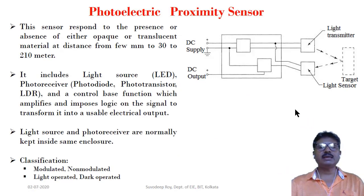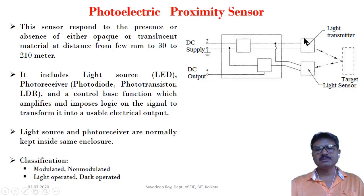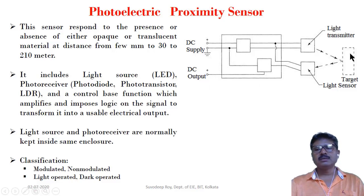There must be a light source and a detector. The light source and detector are separate — this is the light transmitter, and this is the light receiver. When it transmits light, if there is any object in front of the sensor, that light will be reflected and come to the receiver. The receiver will ultimately produce an output signal. In the presence of an object it will give either 0 or 1, and in absence it will give the opposite.